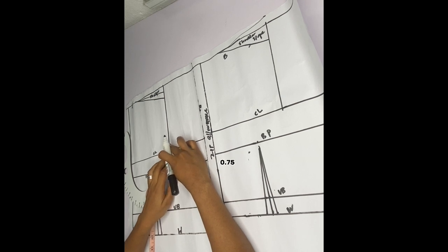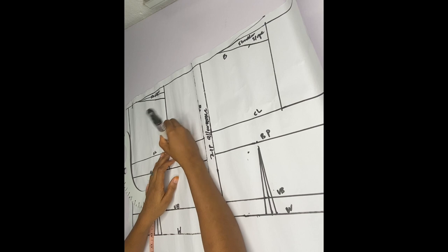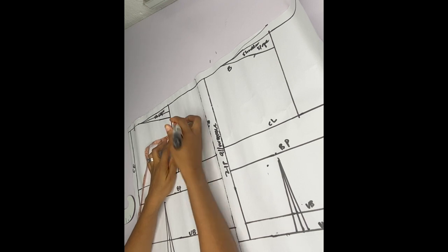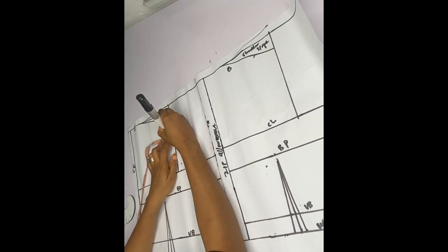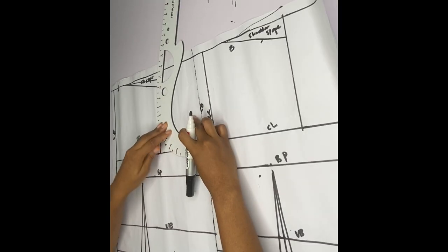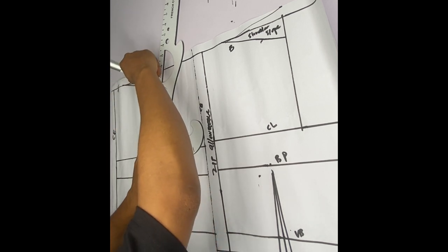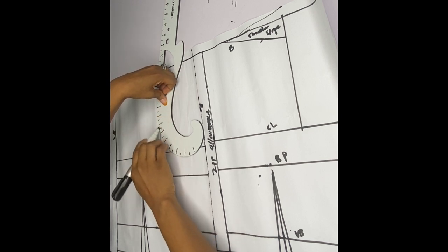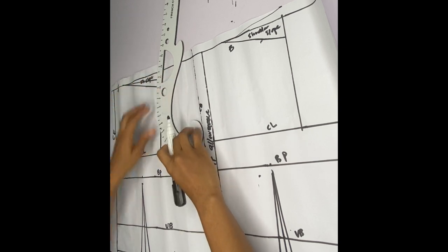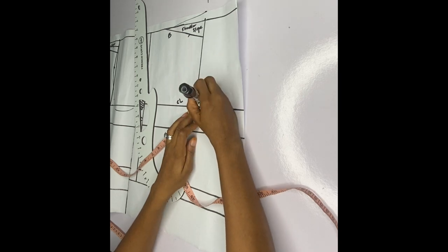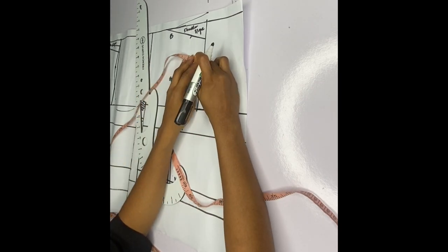Remember we took out one inch from the shoulder, and we're going to factor that one inch back. After taking the shoulder slope, on the armhole depth I'm going to go in by 0.75 and go out by 0.25. I'll do the same thing to the back — armhole depth goes in by 0.75, then out by 0.25.